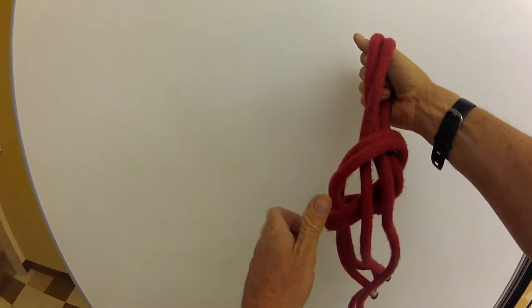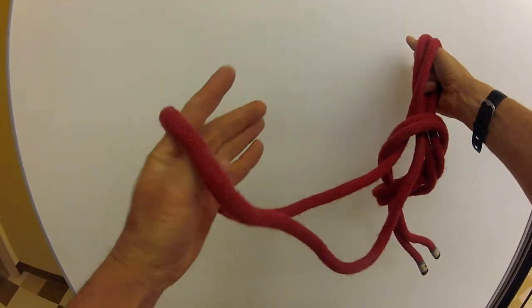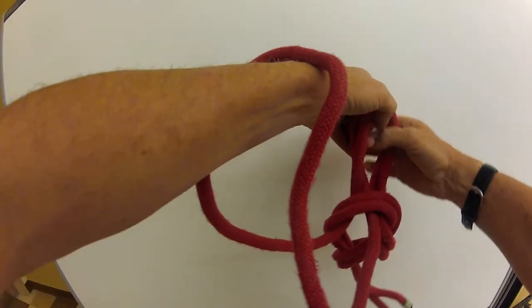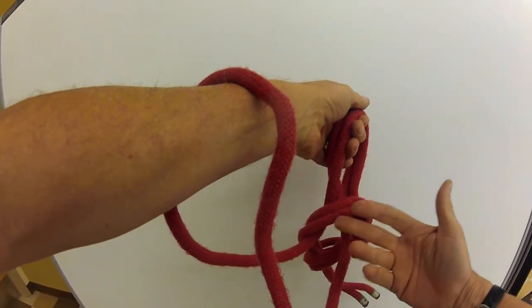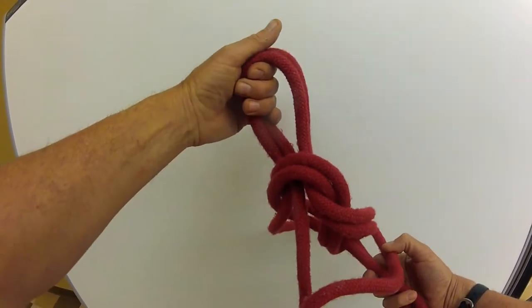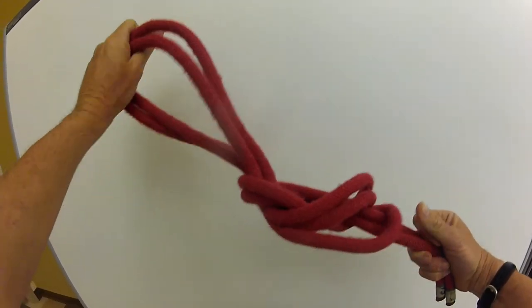I'm going to continue holding on this, take my other hand and go through this loop and grasp those two, that bite that I put through. Pull that loop down to the bottom of the knot and then pull the slack out.